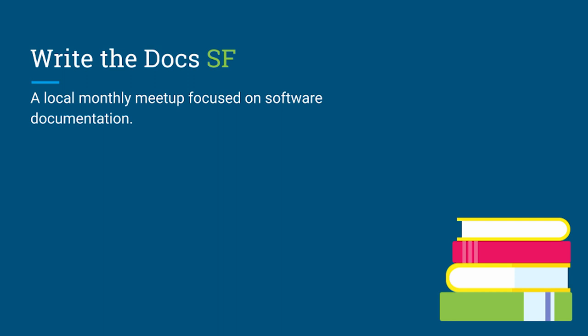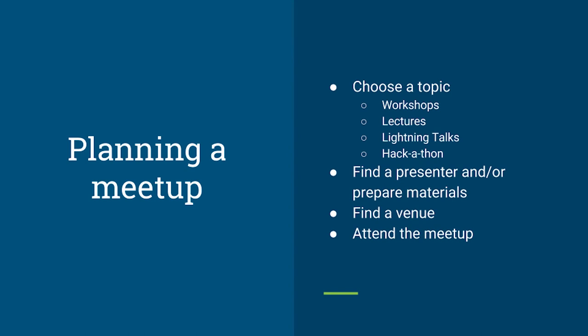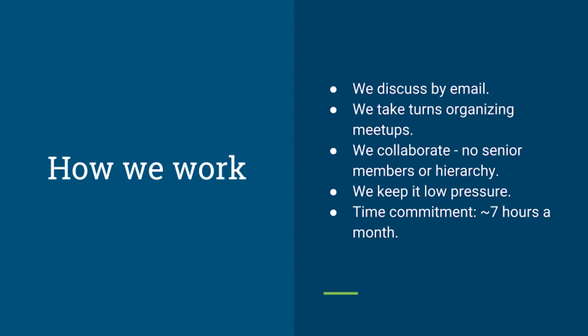Our main responsibility as organizers is to plan these meetups. That usually includes choosing the topic, finding a presenter, preparing the materials, finding a venue, and going to the meetup — because if you're the one who organized it, you should probably be there. The way we work is we usually discuss things through email and take turns organizing. There are four of us right now, so we each organize one every four months, which is kind of nice.